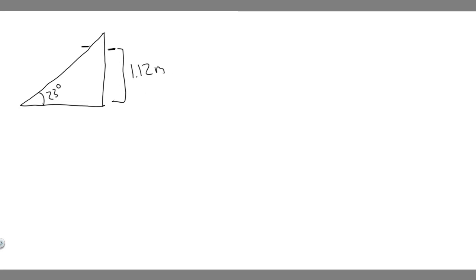So this is our drawing. Let's add a person — imagine this is the person on the sled at the beginning, and then this is them at the top. That's our drawing, and now how do we solve this problem?